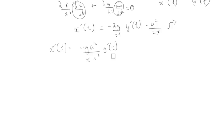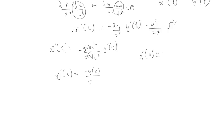There's another thing we can convert this to. When we're differentiating with respect to t, the variable turns into a variable in terms of t, so x and y can be written as y(t) and x(t). We have the boundary condition y'(0) = 1. Plugging t = 0 gives x'(0) = −y(0)/x(0) · a²/b² · y'(0).